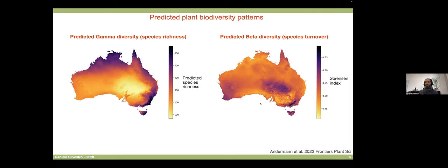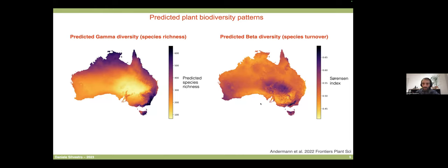These are the maps obtained with our deep learning framework. Inputs included occurrence records from GBIF, climate data, and a few other layers. Our trained models generated projections of gamma diversity and beta diversity across the Australian continent. In machine learning there is a lot of focus on accuracy, but in ecology and evolutionary biology we are sometimes as interested in the uncertainty of our predictions as in accuracy itself.